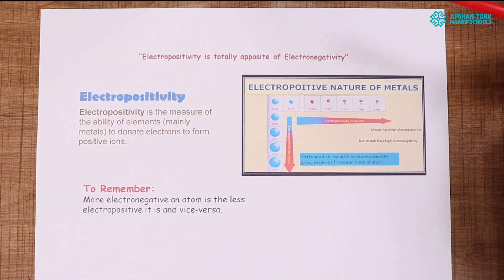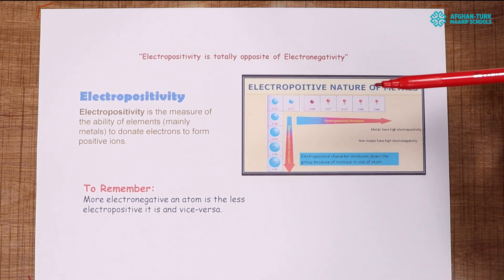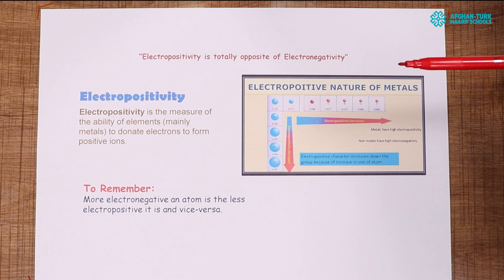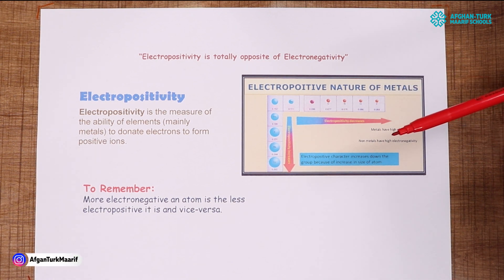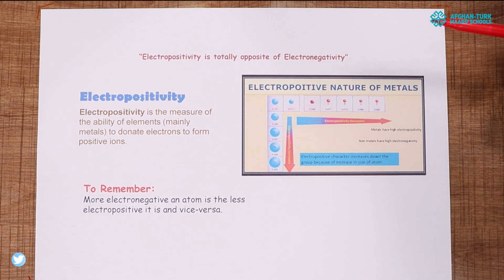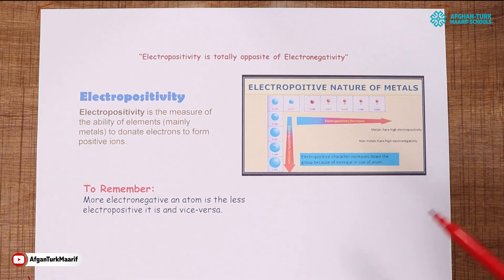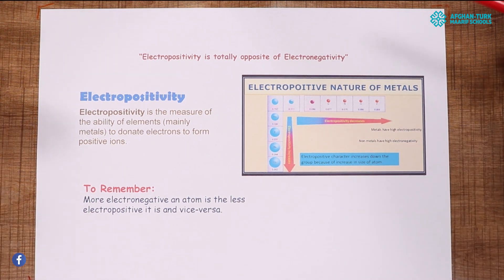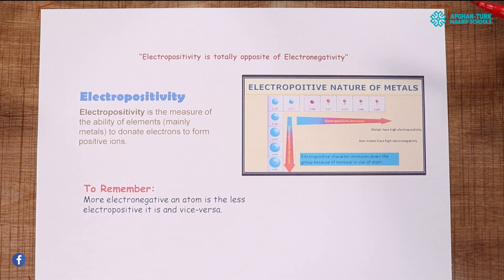Electropositivity is a measure of the ability of elements — mainly metals — to donate electrons to form positive ions. Non-metals are mostly electronegative and metals are mostly electropositive. If an element is electropositive, it will lose electrons in a reaction; if it is electronegative, it will gain electrons in the reaction.